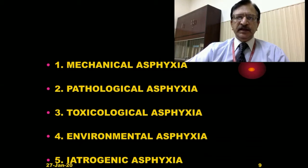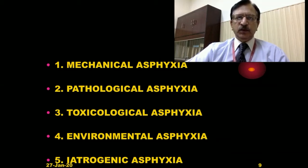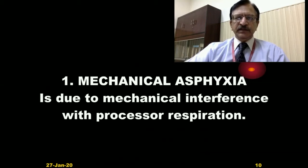Hydrogenic asphyxia occurs during anesthesia, where anesthetic gases are introduced and also induce asphyxia by interfering with the transport of oxygen into the cells at the level of the cell membrane. We reviewed the types of asphyxia because we are now starting with the most important from a forensic point of view: mechanical asphyxia. Mechanical asphyxias are due to mechanical interference with the process of respiration.